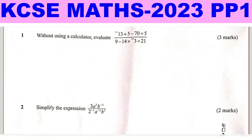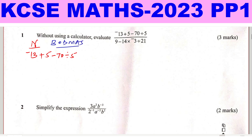Question one: without using a calculator, we're going to begin with the numerator. The numerator is negative 13 plus 5 minus 70 divided by 5. We shall follow the order of operations — BODMAS. According to this order, we start with division first, so we work out 70 divided by 5, which gives 14.